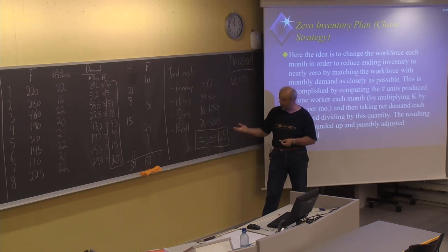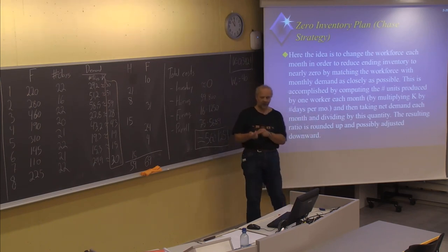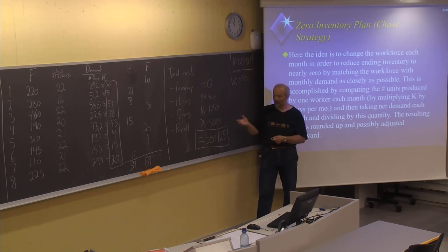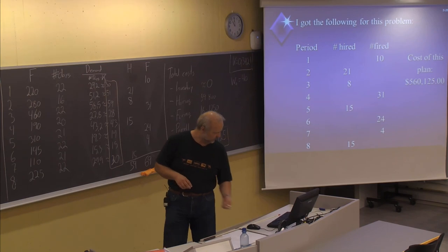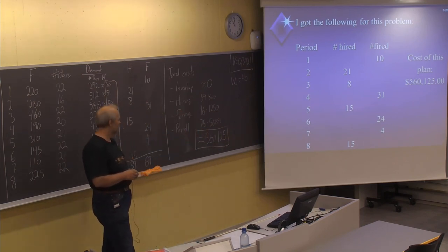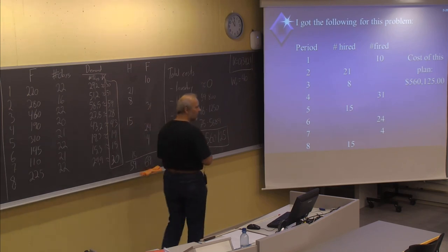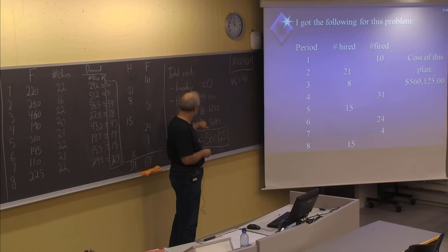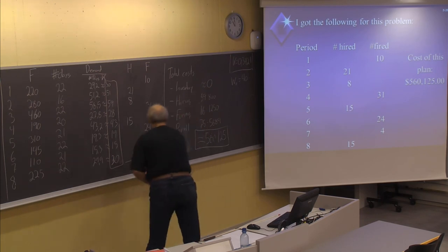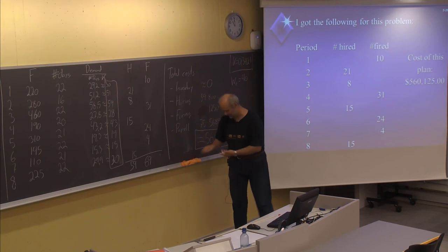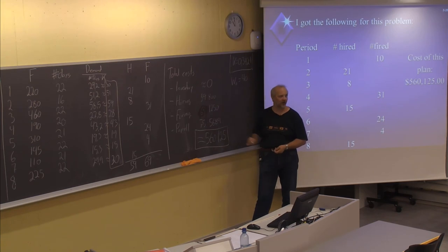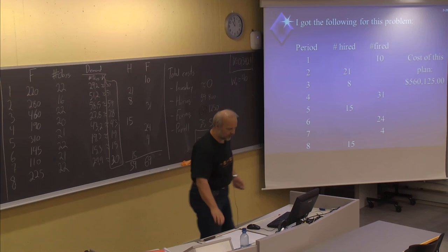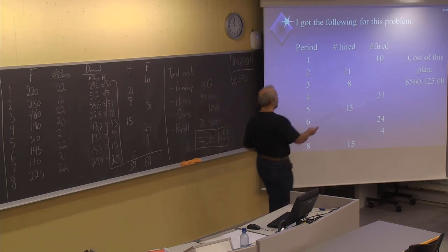The chase strategy total cost of $560,125 is cheaper than the basic constant workforce plan at $599,000, though we saw the modified constant workforce plan could get down to around $467,000. The total cost includes 59 hirings at $800 plus 69 firings at $1,250 plus the payroll of 5,689 working days at $75 each.